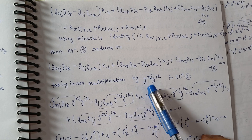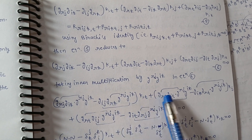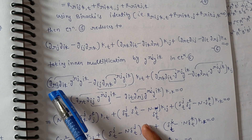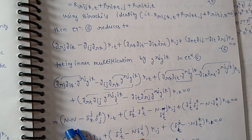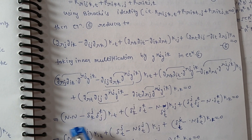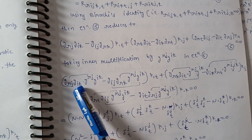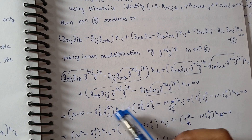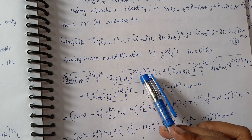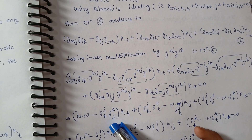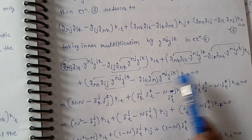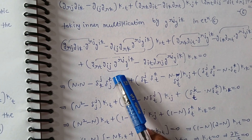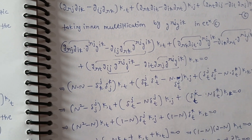For inner multiplication, we multiply all terms by g^rj and g^ik. After contraction, since g^rj and g_rj are paired, they give delta^j, and similarly g^ik and g_ik give delta^k. We represent one contravariant and one covariant index. After these contractions, the result involves n into n, giving n-squared times kK.